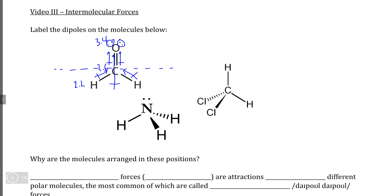From this, we can conclude that the top half of the molecule has a slight negative pull and the bottom half has a slight positive pull. More accurately, the slight positive pulls are placed on the hydrogens.